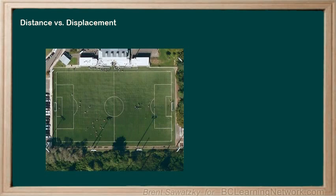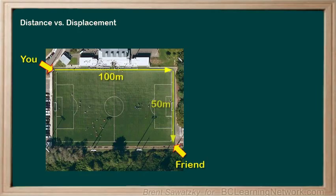Another example. You're watching a soccer game and you want to get to the opposite corner of the field to say hi to a friend. A game is starting, so you elect to walk around the outside of the field. By walking around the field, you walk a total of 150 meters — 100 meters over and 50 meters down. Therefore, your distance for the trip is 150 meters, no direction, just magnitude.